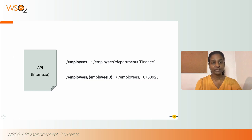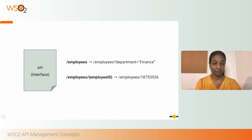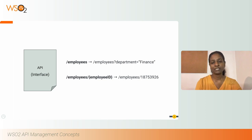In API Publisher, the first thing you do is to design this interface. Once that is done, you need to specify the actual backend endpoint for this API. Then WSO2 API Manager, as the middleman, can direct the requests coming to your API proxy to the actual backend. Given that this is the basic functionality, let's dive into the enhanced features you can expect from WSO2 API Manager's Publisher component as a complete API management platform.